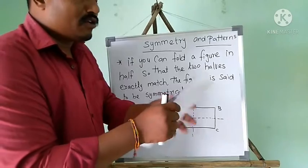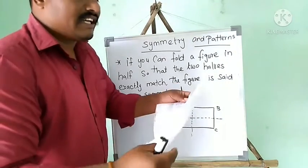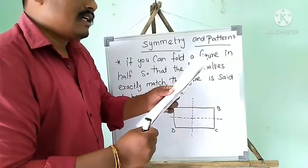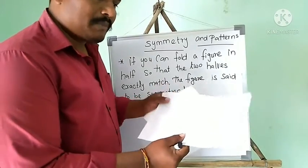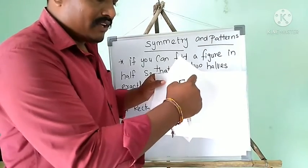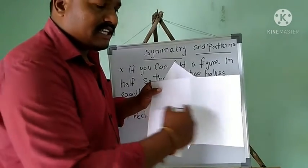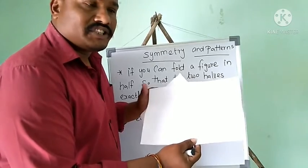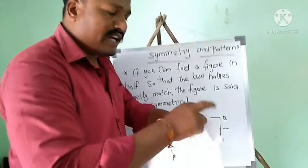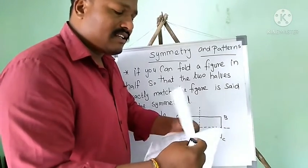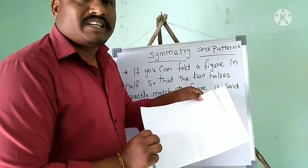A rectangle-shaped paper, if folded horizontally, the sides match — that is one line of symmetry. If folded vertically, that also matches — so a rectangle has two lines of symmetry.